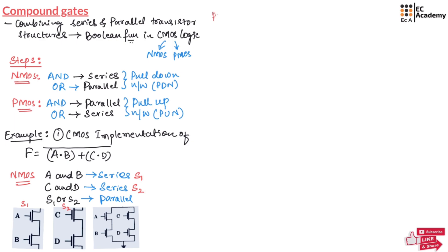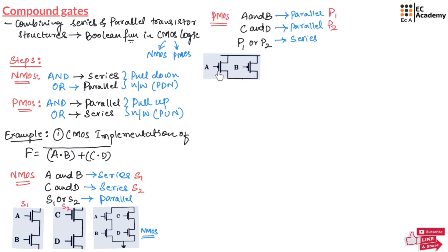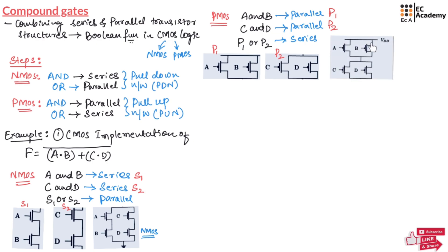To implement using PMOS, the function A AND B should be implemented in parallel — let us call this P1. The function C AND D should also be implemented in parallel — let us call this P2. Then P1 and P2, representing the OR operation, can be implemented using a series combination of PMOS. So A and B are connected in parallel, C and D are connected in parallel, and then these two parallel groups are connected in series.